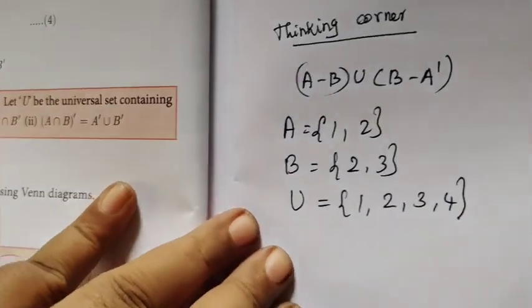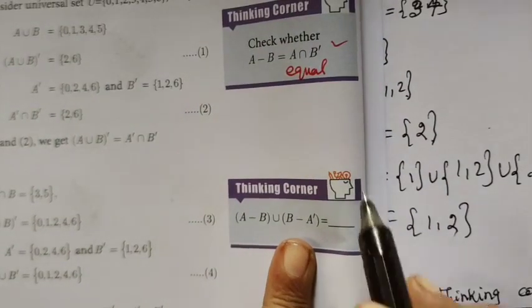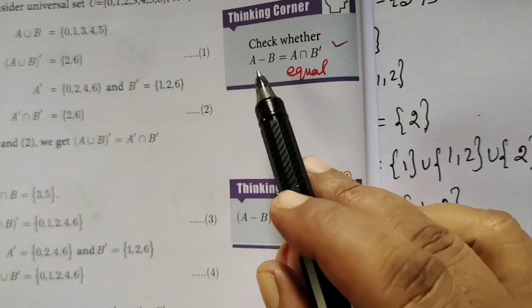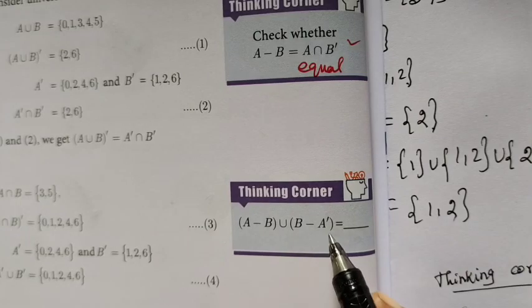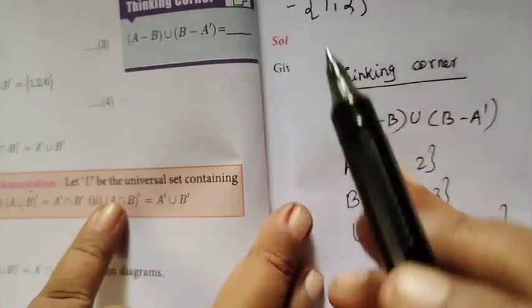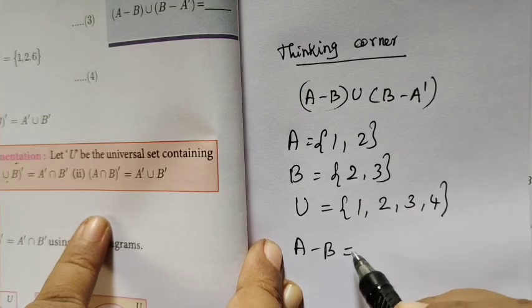Now we will write the thinking corner. These two are equal. This will be equal. This is equal. So A minus B. This one is B. This one is U. Now we will write the top. First, A minus B. A minus B.